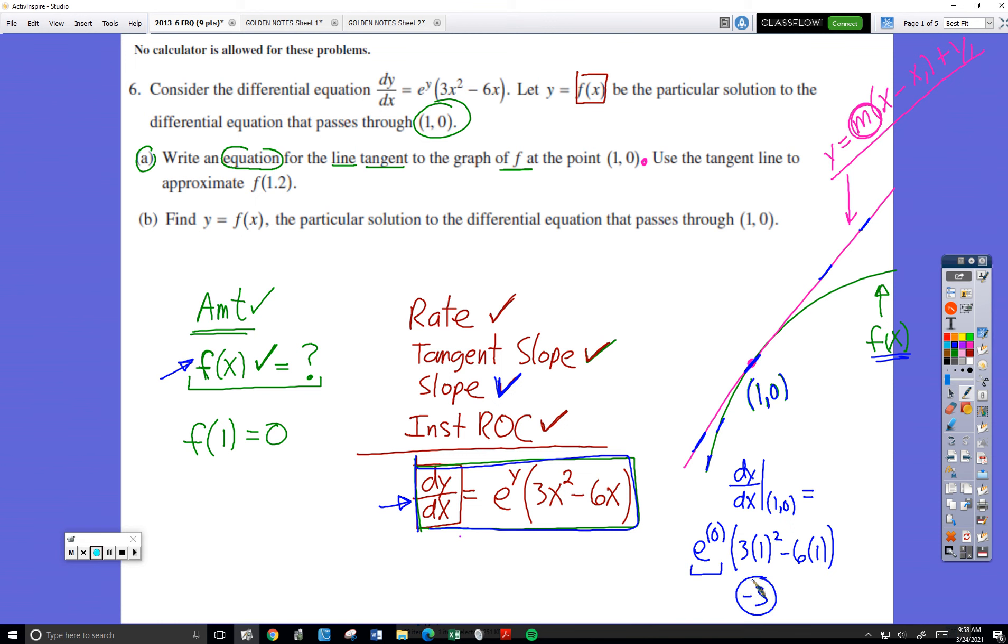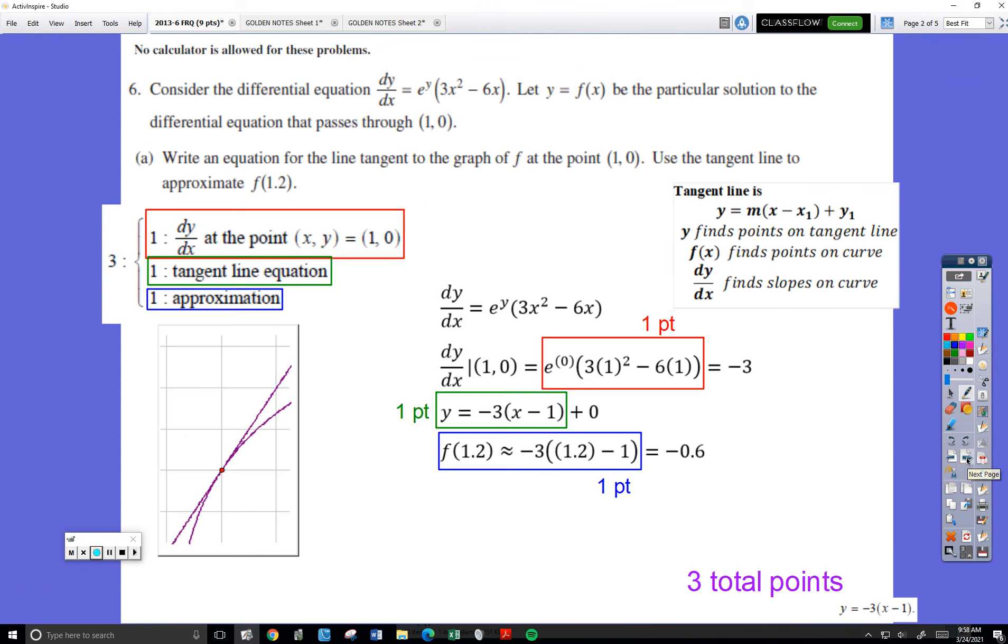Now I can just write down the equation of that line. The equation of that line is going to be y equals negative 3 times x subtract 1 plus 0. Let's go see how they score it. I found the derivative value to be negative 3, that's worth one point. You really don't have to show your work here. That's the kind of thing where as long as you find the value they'll give you credit for it. I think it's smart to show your work because it prevents mistakes. One more point for writing that equation of the line.